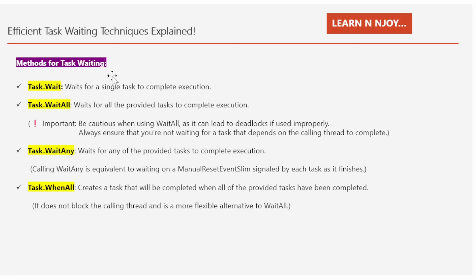There are mainly four methods of Task that help make a thread wait until the task completes: Task.Wait, Task.WaitAll, Task.WaitAny, and Task.WhenAll. Task.Wait waits for a single task to complete, whereas Task.WaitAll waits for all provided tasks to complete. WaitAll is similar to waiting on each task in turn, but is more efficient in that it requires at most just one context switch.